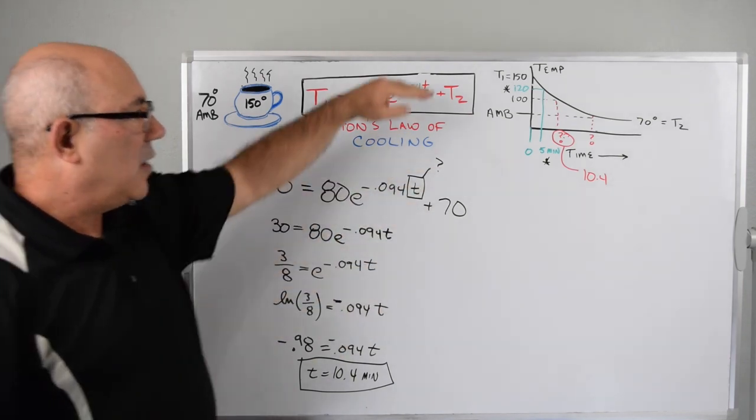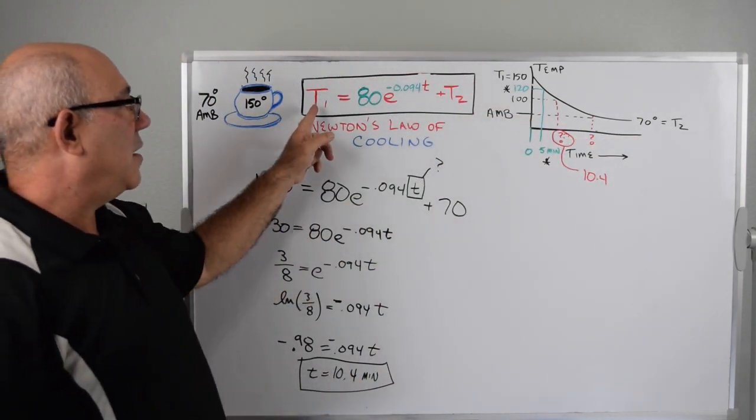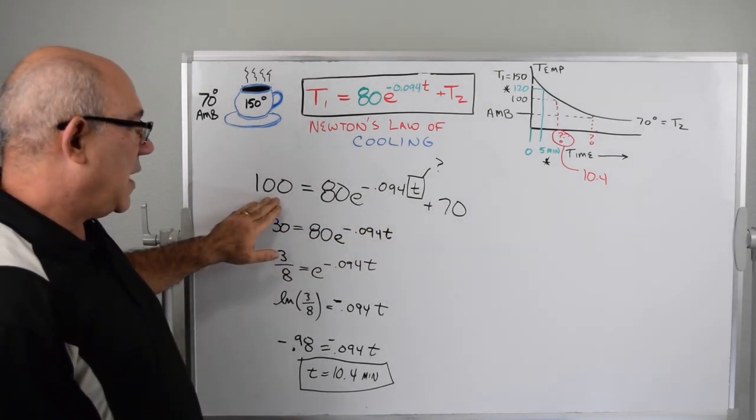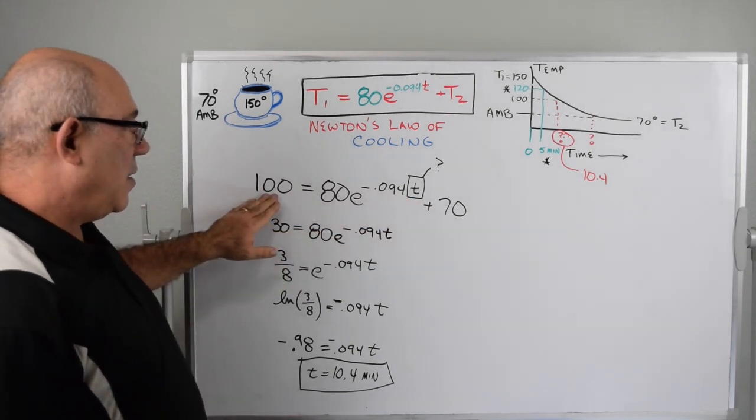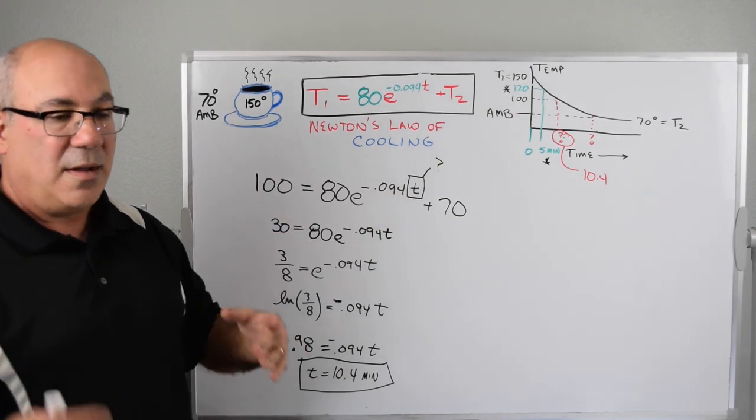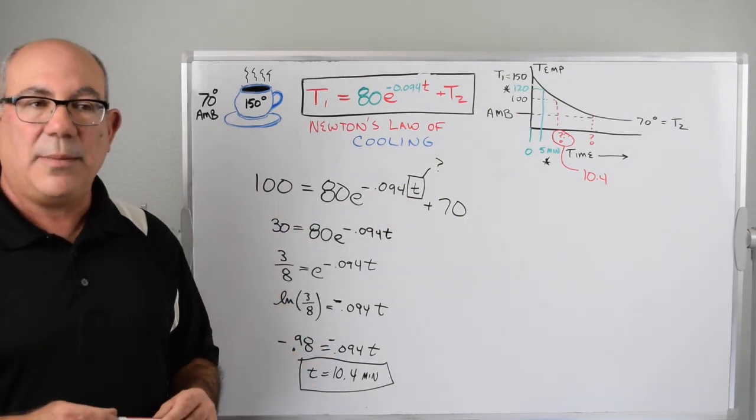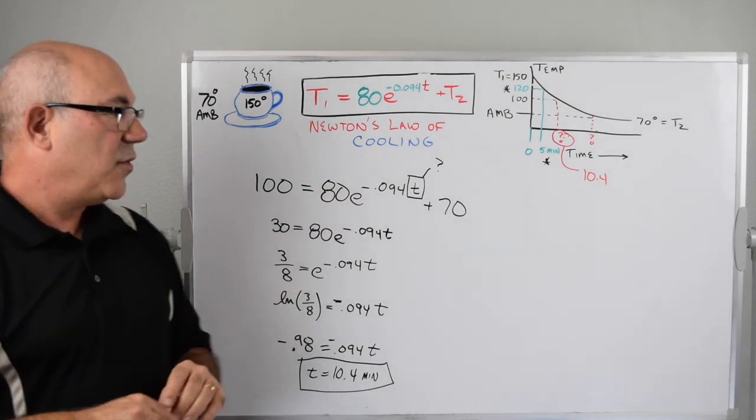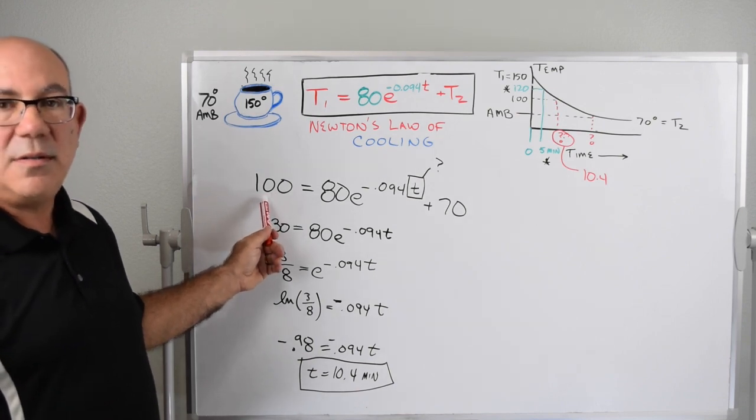Now if we want to get to 70 degrees, it's quite interesting. If we put 70 here, this is going to be zero, and so that is infinity for t. Technically it'll take forever to actually become room temperature, but this equation kind of breaks down at the boundary. So what we're going to do is make this 71 degrees. Let's go find the temperature if this is 71.